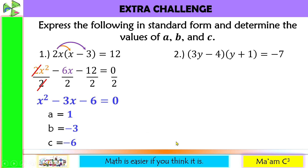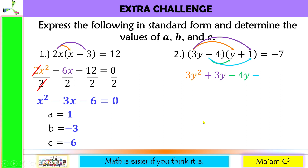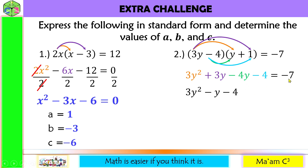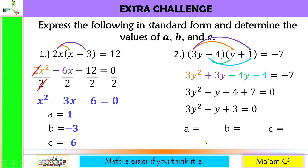Let us have another one, using the FOIL method. 3y times y is 3y squared, 3y times 1 is 3y, negative 4 times y is negative 4y, negative 4 times 1 is negative 4, equals negative 7. So we have 3y squared, and 3y minus 4y gives negative y, minus 4. Move negative 7 to this side — it becomes positive 7 — equate to 0. Negative 4 plus 7 is positive 3. So a is 3, b is negative 1, and c is 3.